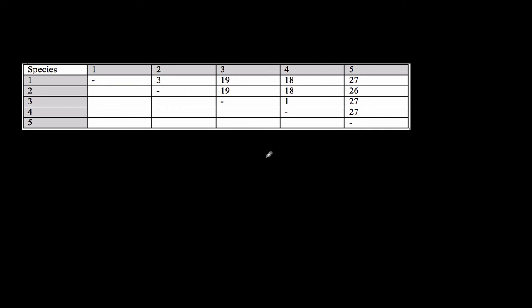So here what we do is you look for the organisms that have the least number of differences. Between species one and species two, there's only three differences. You look for other small differences - between species four and species three, there's only one difference. So these two share only three differences, these share only one - these must be really closely related. And then you look here - species five compared to all the other ones, there's major differences. It has huge numbers: 27, 26, 27, 27. So the ones that have the least numbers are more closely related. The one that has the biggest differences from the rest, that's your out group right there.